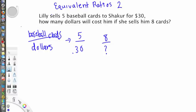The first thing you see is I set up our ratio. We're comparing baseball cards to dollars. Then we see here that Lilly is selling 5 cards for $30, and then it asks what happens if she sells him 8 cards, how much will it cost him then?